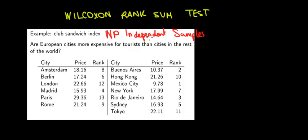When we have independent samples, there is no relationship between those values. In this example, we're comparing an index for the price of a sandwich in European cities versus the rest of the world. The way we do this test is by looking at the sum of ranks — that's why it's called the rank sum test.